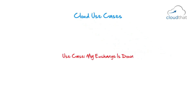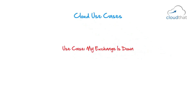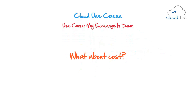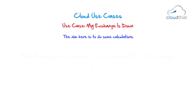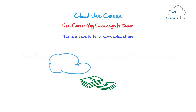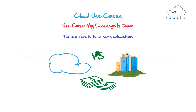Use case 1: My exchange is down. So far, we talked about availability, durability and scalability. But what about cost? Is cloud cheaper or more expensive to use than on-premise infrastructure? The aim here is to do some calculations on how much it costs to provision infrastructure on cloud versus owning it in-house.